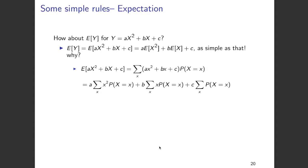To derive this, we find the expectation of y from first principles, which is the sum of (ax squared plus bx plus c) times the probability over all values of x.